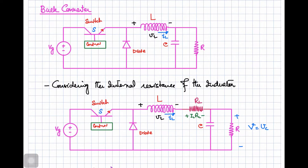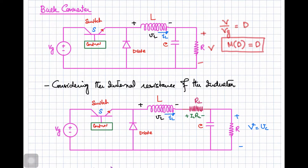We have discussed the transfer function of this buck converter in a previous video, given as V/Vg = D, where V is the output voltage and Vg is the input voltage. So the transfer function is simply equal to D if we consider ideal inductor, capacitor, and switches.